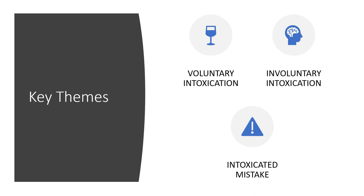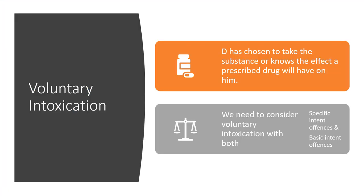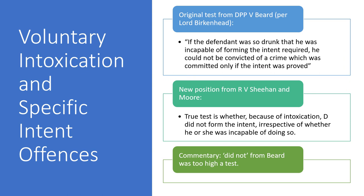The key themes are voluntary intoxication, which behaves differently for specific intent crimes versus basic intent crimes, and involuntary intoxication, which remains the same for both. We will also look at the idea of intoxicated mistake. Voluntary intoxication is broadly where a defendant has chosen to take the substance or knows the effect a prescribed drug will have on him. We need to consider it in relation to both specific and basic intent offences.